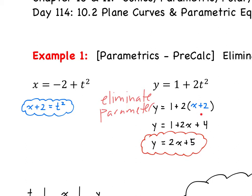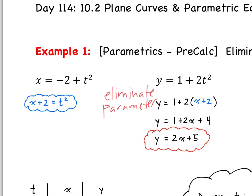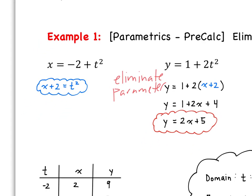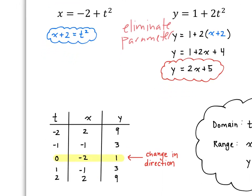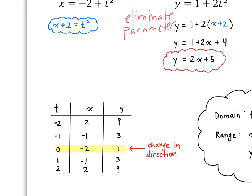So t² is x plus 2, and when we clean this all up, we get y is equal to 2x plus 5. We were able to eliminate the parameter — we have y in terms of x. Now in order to graph this, we do need to graph in terms of that parameter, that t value.